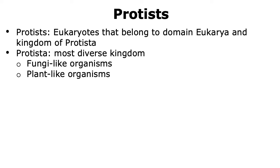Also, plant-like organisms which have a cell wall and are autotrophs also belong to this kingdom. These plant-like organisms can be unicellular while some of them are multicellular, like different types of algae. In addition, in the kingdom of Protista, we also have animal-like organisms which are heterotrophs that lack a cell wall.